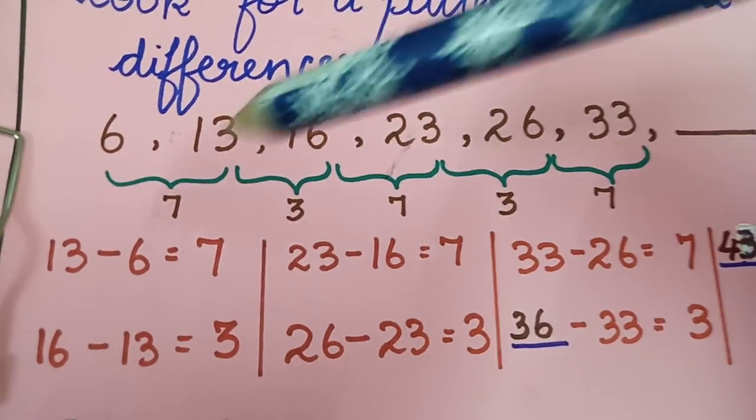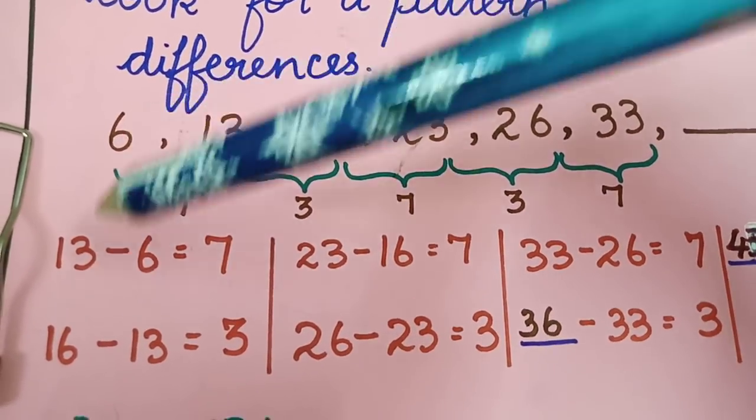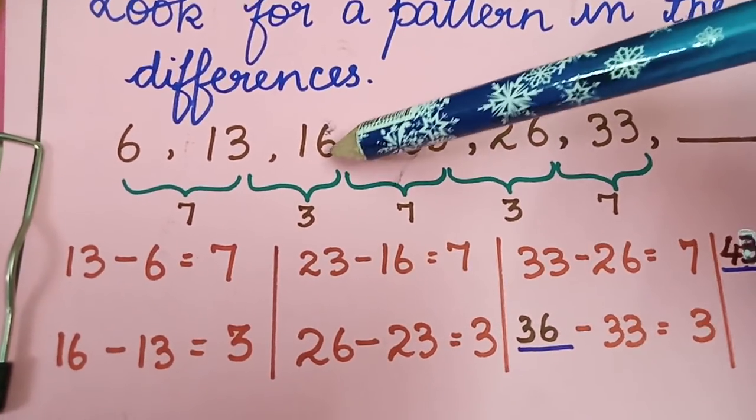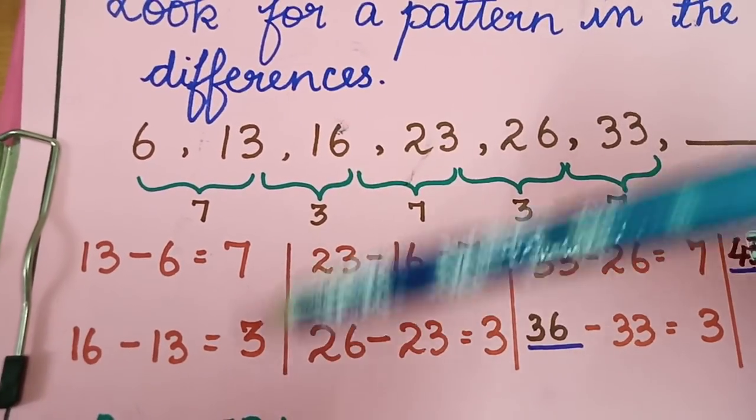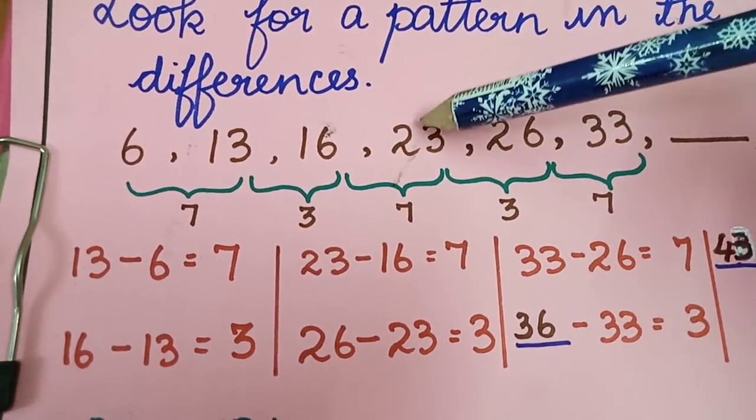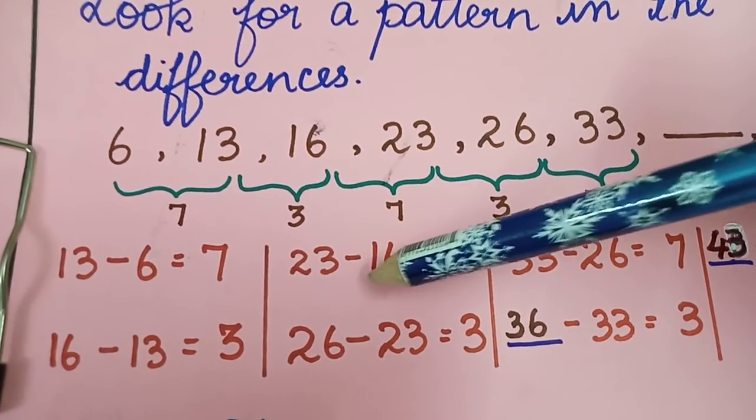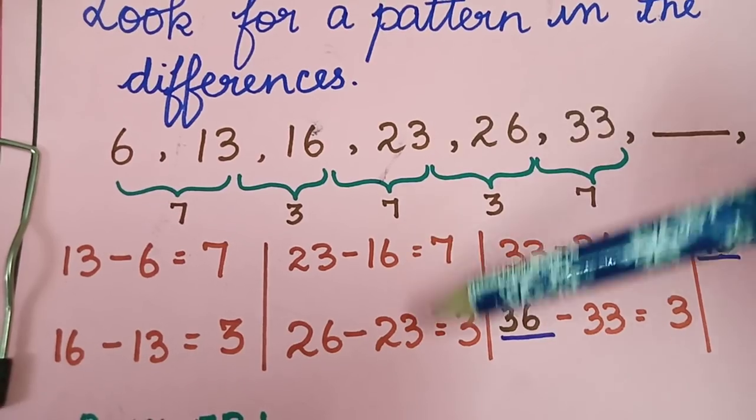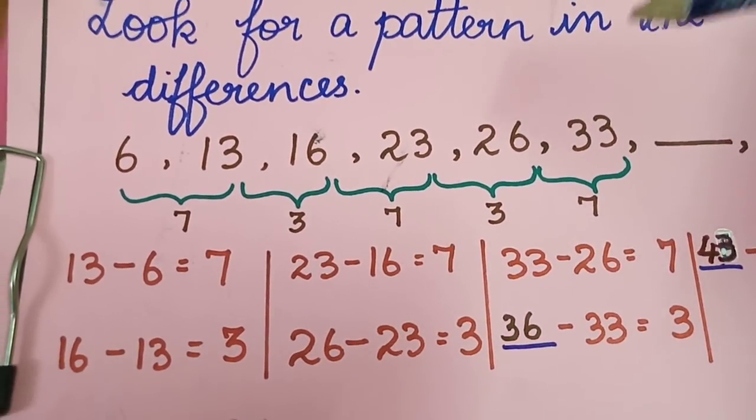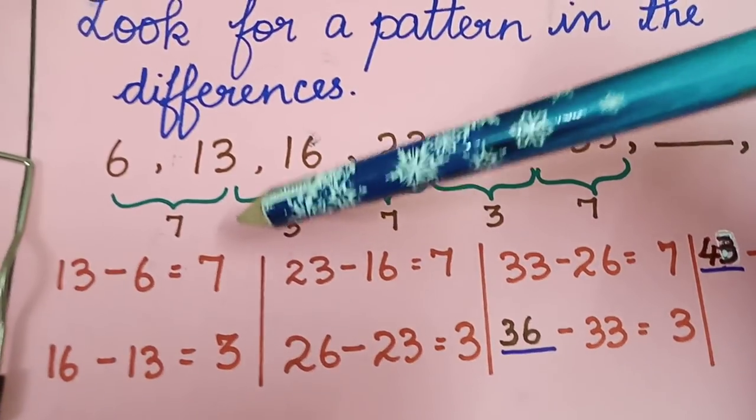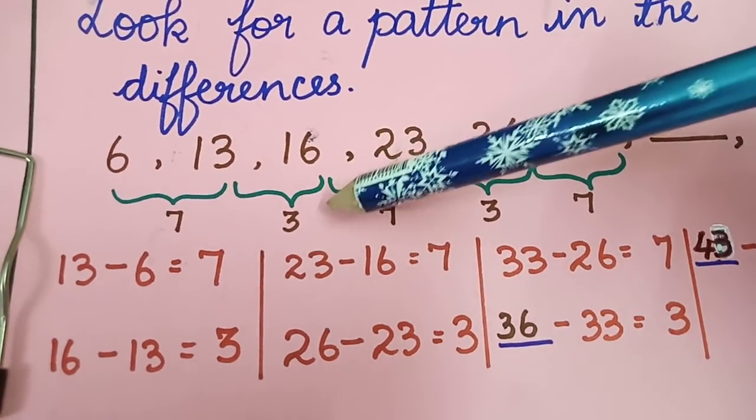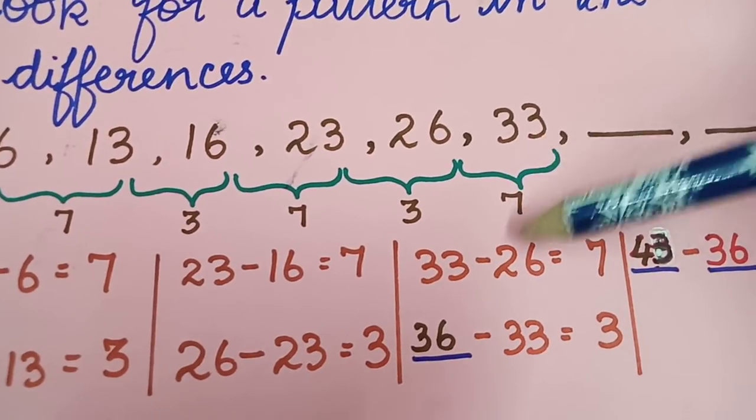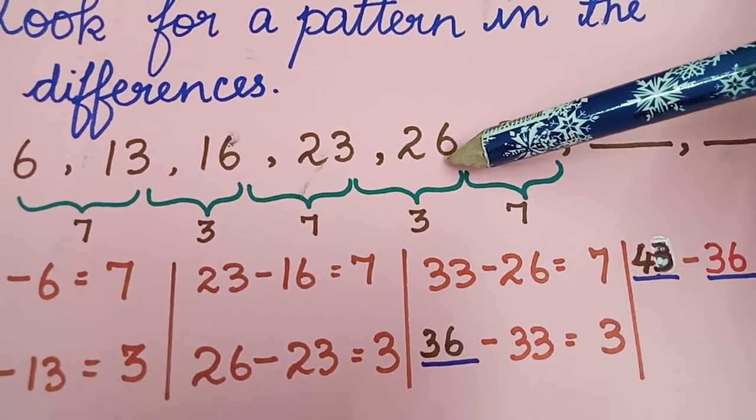We need to find the difference of 13 and 6. 13 minus 6 gives you 7, and the next 16 minus 13 gives you 3. And next we have 23 minus 16 gives you 7, and 26 minus 23 gives you 3. Likewise, we found out the patterns are 7, 3, 7, 3. Likewise we have to proceed the problem. So now 33 minus 26 gives you 7.